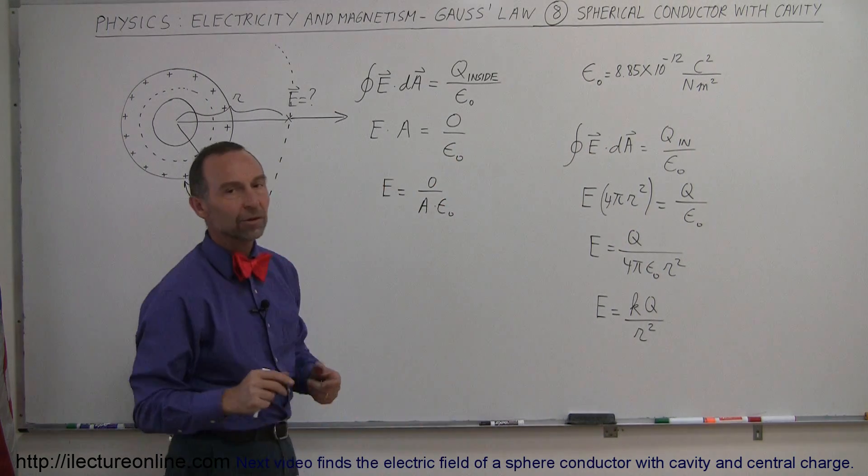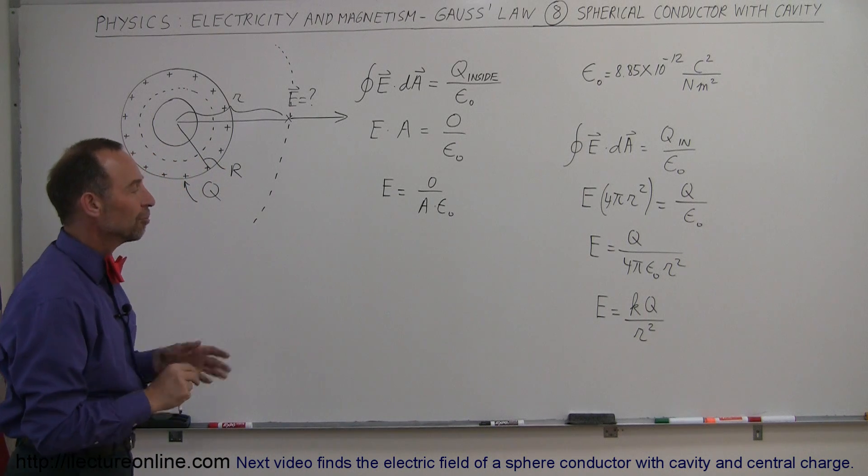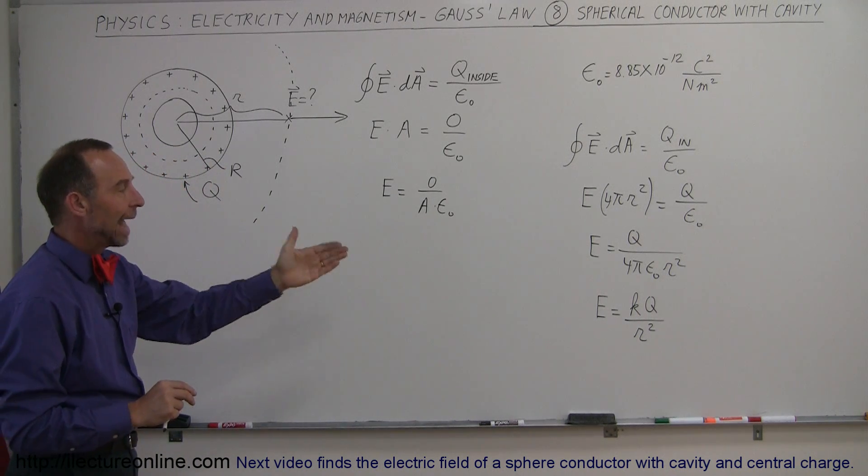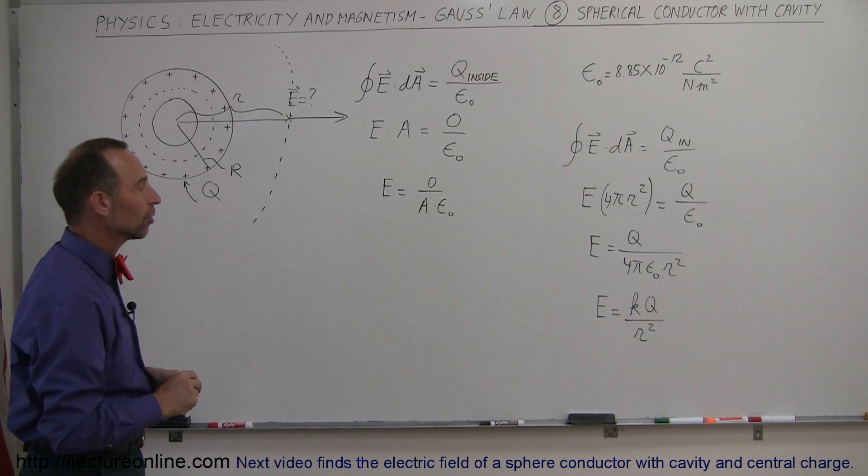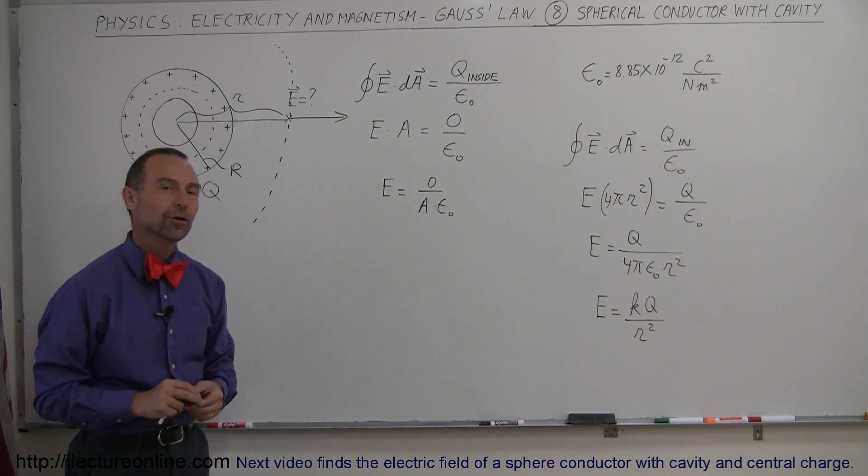And that, of course, is the very common equation that we're now familiar with, with the electric field at the distance r away from the center of the charge. It's going to be equal to KQ over R squared.